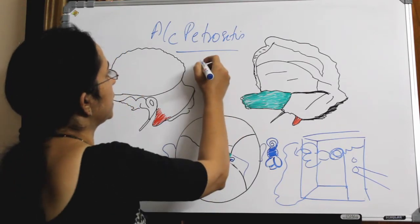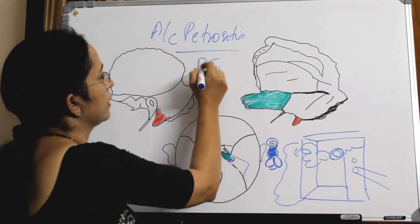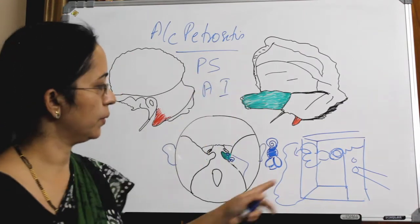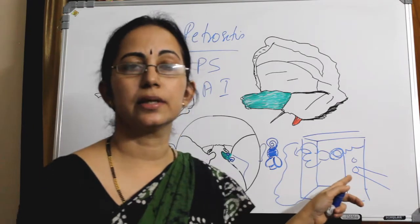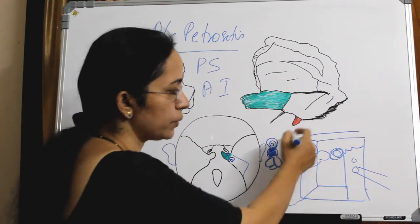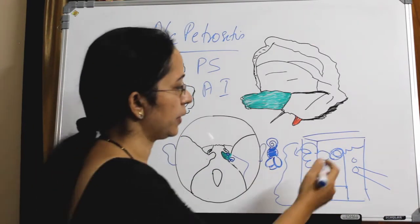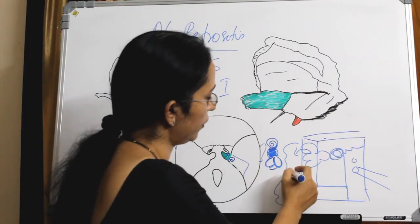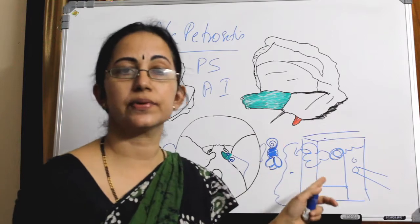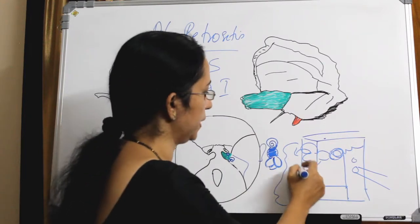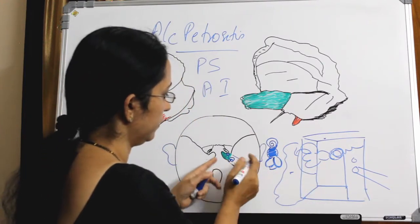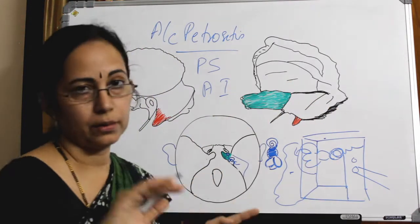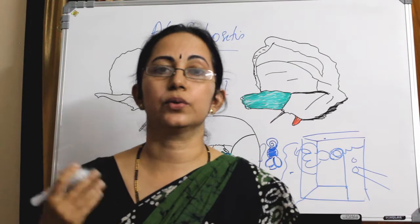One is a posterior superior tract and another one is an anteroinferior tract. Posterior superior means it goes around the semicircular canal. So if the infection is in the epitympanum or from the mastoid, this infection will go posterosuperiorly around the semicircular canal to the petrous apex.